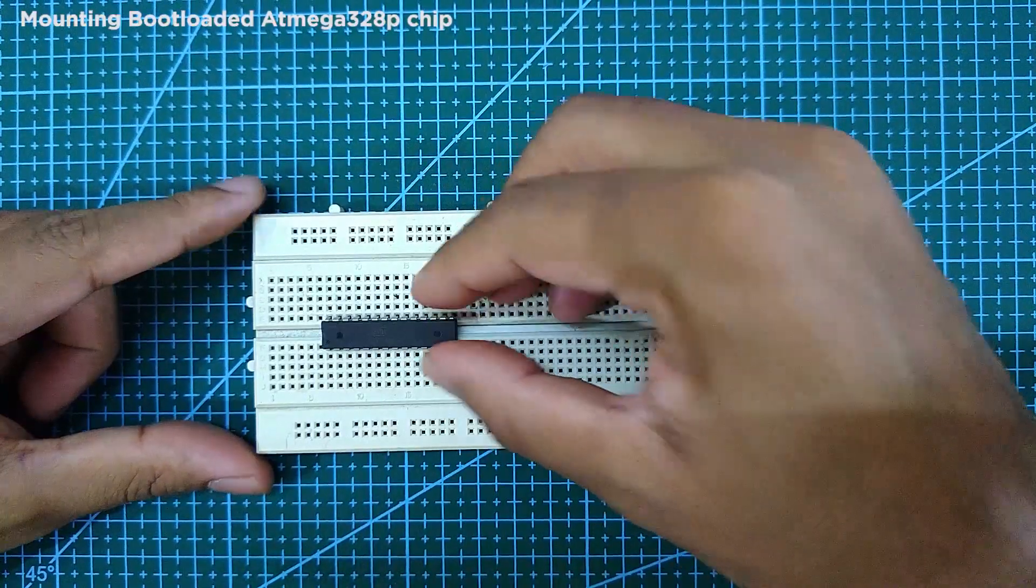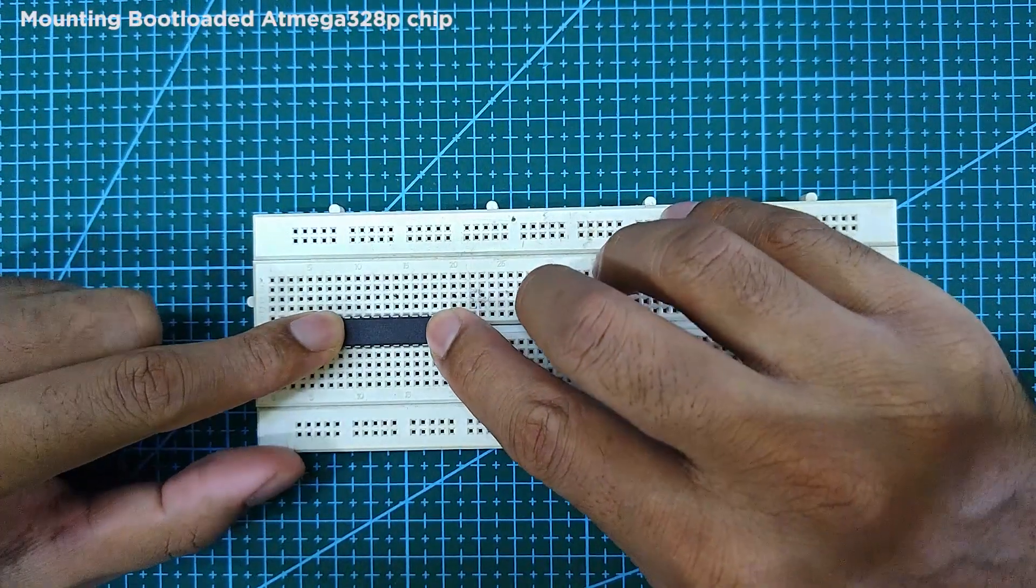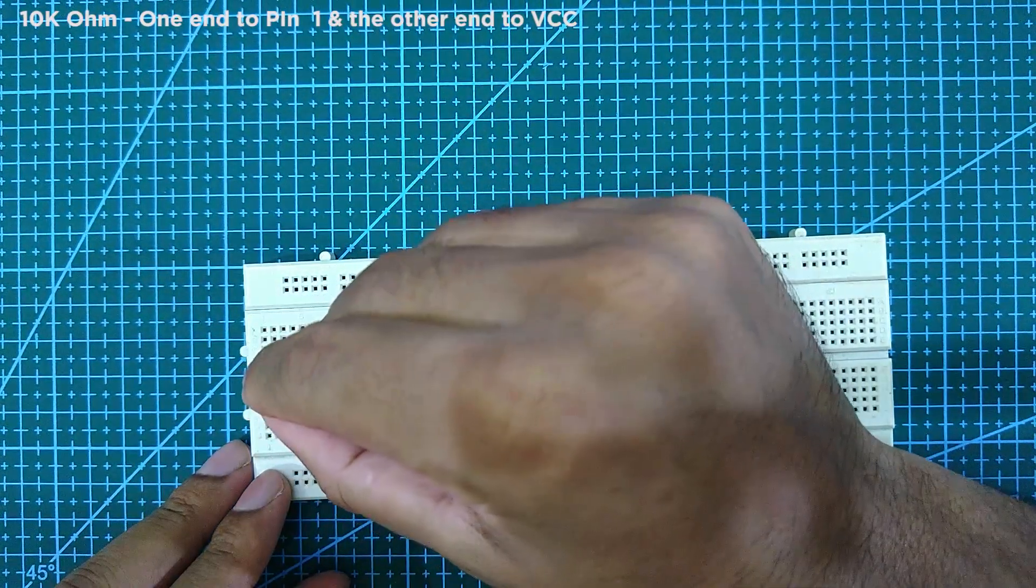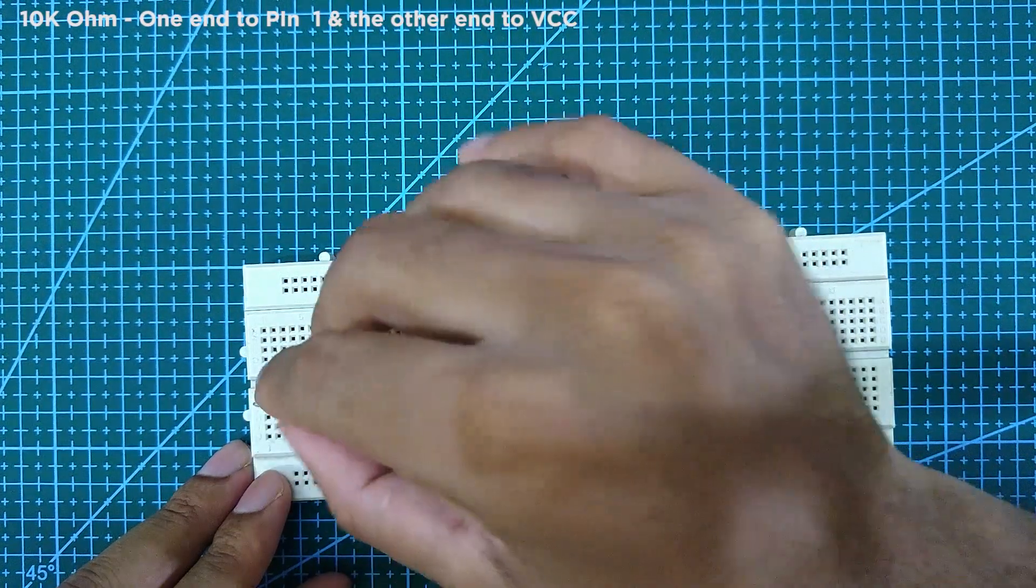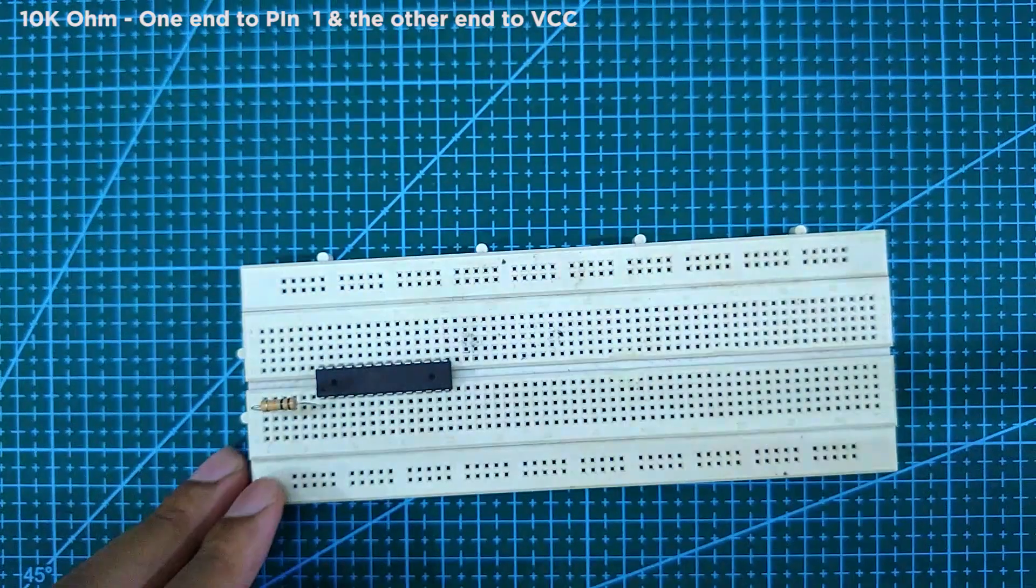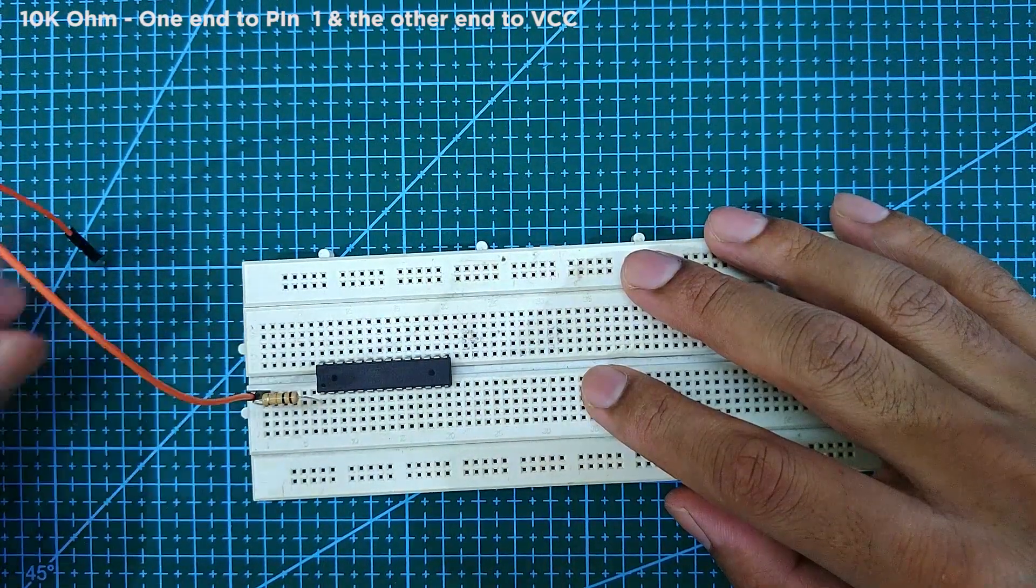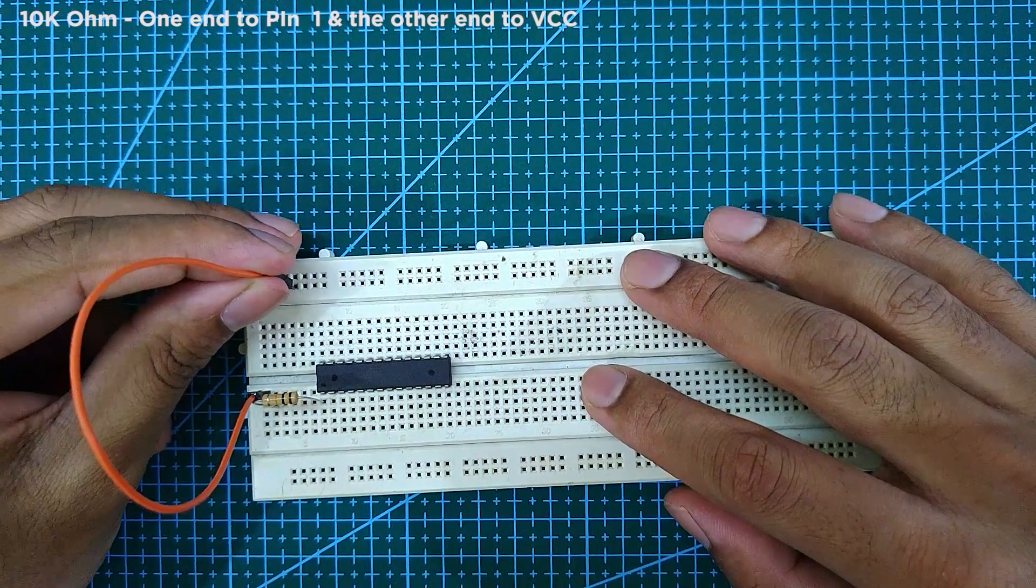First, mount a bootloaded ATMEGA 328P chip on a breadboard. Next, connect one end of a 10k resistor to pin 1, and connect the free end of the resistor to VCC.